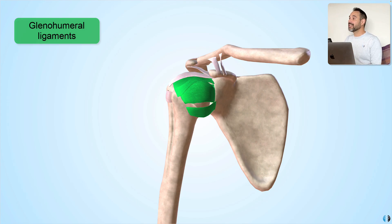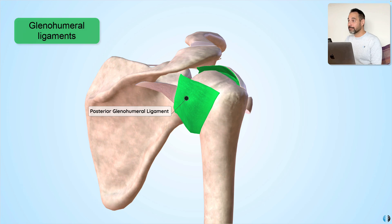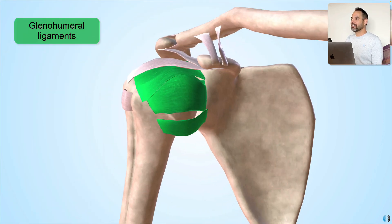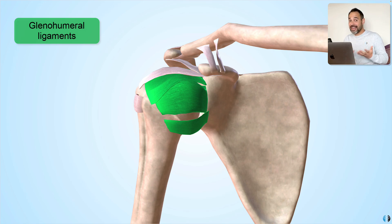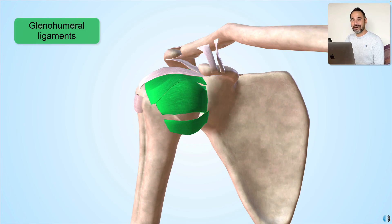We also have the posterior glenohumeral ligament, with exactly the same job of connecting the glenoid to the humerus, just located in a slightly different location. The most common time that these ligaments are going to get injured is with shoulder dislocations. Anterior shoulder dislocations are much more common than posterior shoulder dislocations, and that's why we have so many more glenohumeral ligaments on the front of the shoulder to prevent that anterior dislocation.